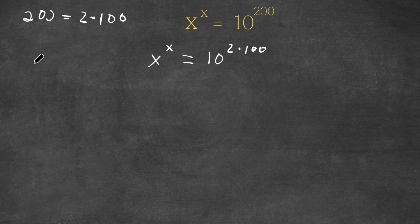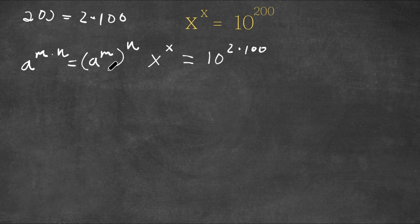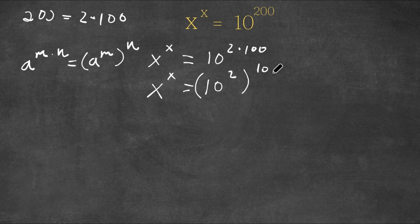Now if we have something in the form a to the power of m times n, this is equal to a to the power of m, to the power of n. And the same thing goes vice versa — a to the power of m to the power of n is equal to a to the power of m times n. So now I'm going to rewrite 10 to the power of 2 times 100 as 10 to the power of 2, to the power of 100. So this means that x to the power of x is equal to 10 to the power of 2 to the power of 100.